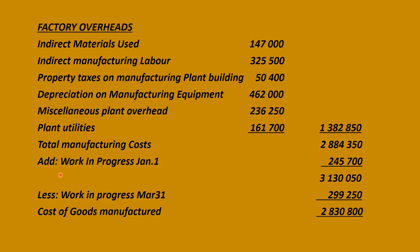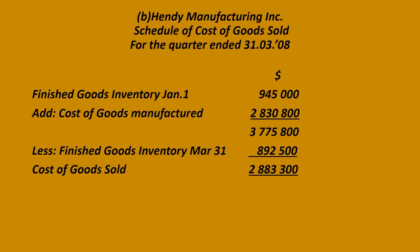To the total manufacturing costs we make the work-in-progress adjustment — we add the balance at the first of January minus the balance at the end of the quarter — and we will get the cost of goods manufactured. So we move on to the next part.